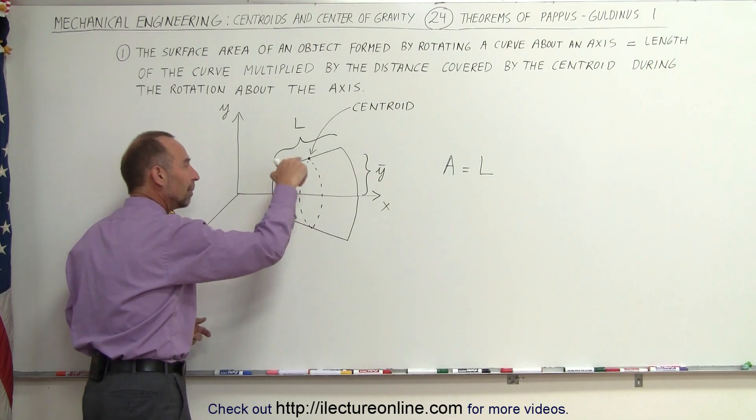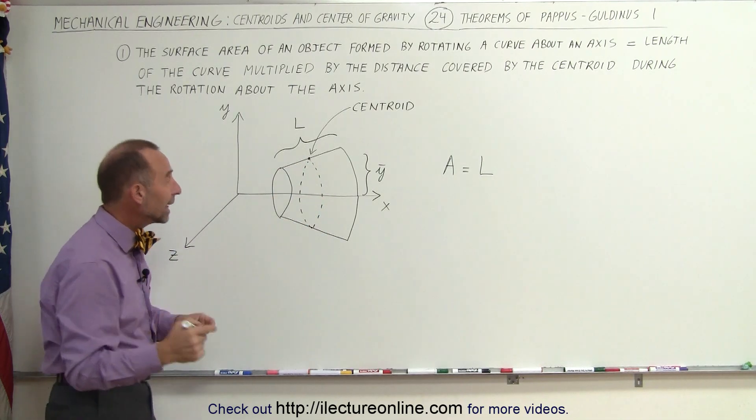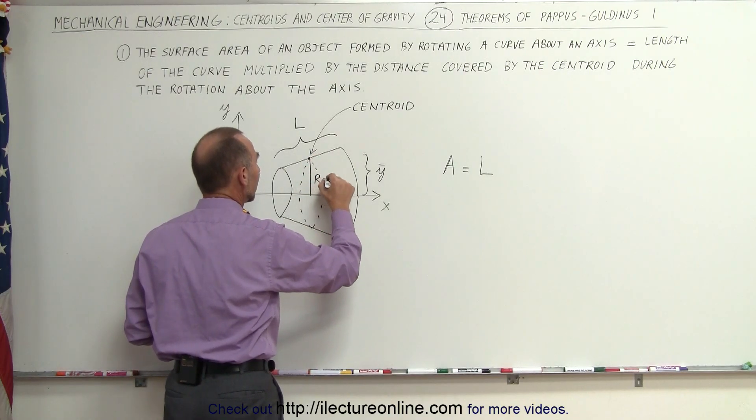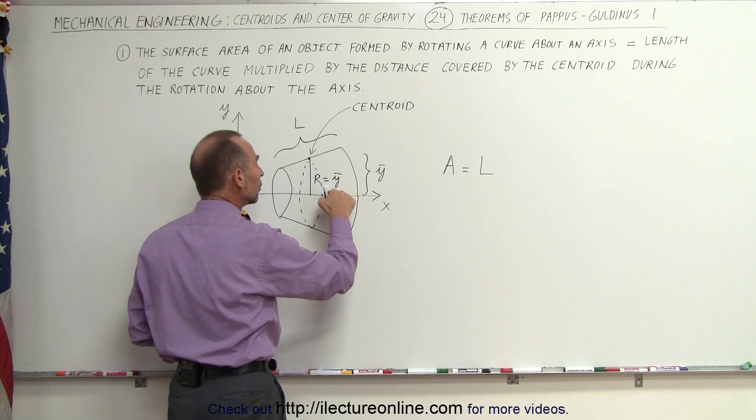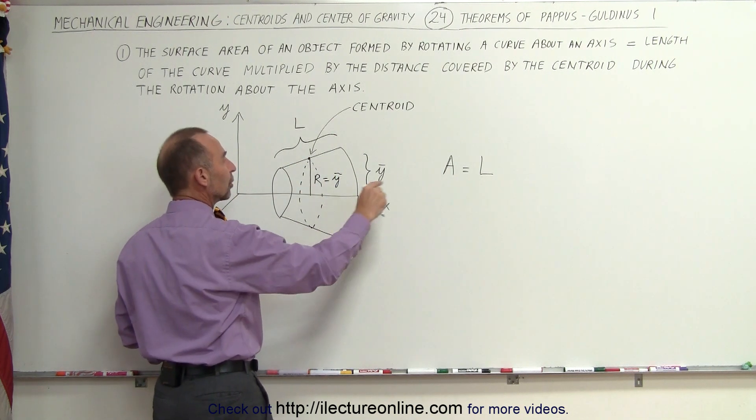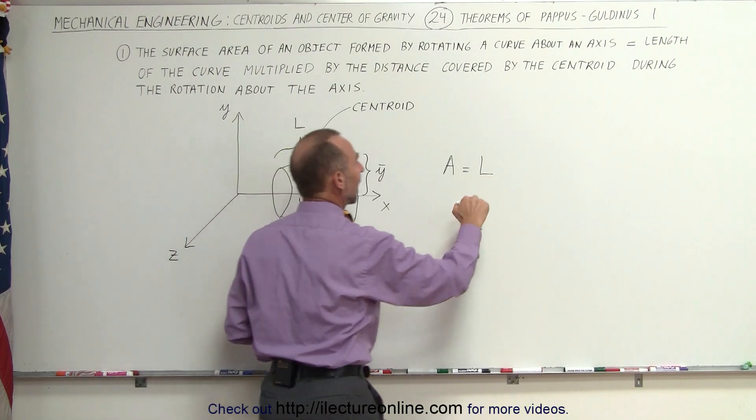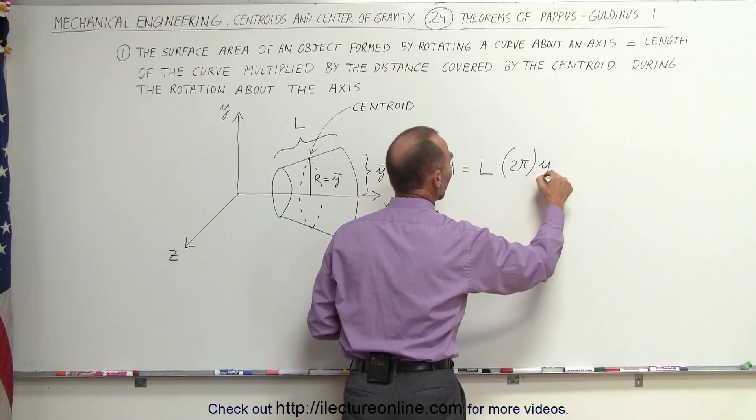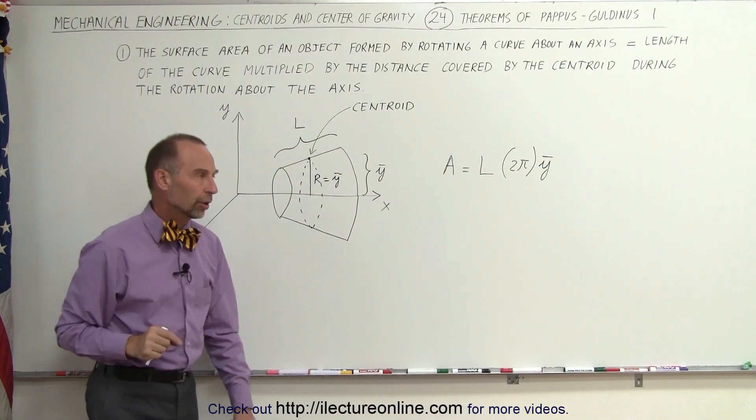The distance of that circle path will be 2π times the radius of that circle path, and the radius of that circle path R is equal to the y-coordinate of the centroid of that curve. Again, we multiply the length of the curve times the path length 2π times the y-coordinate of the centroid.